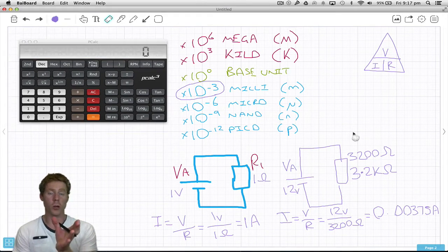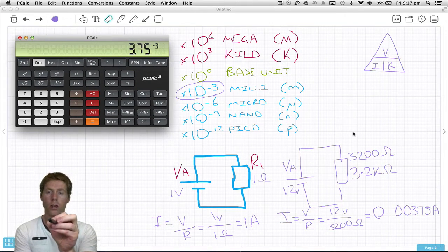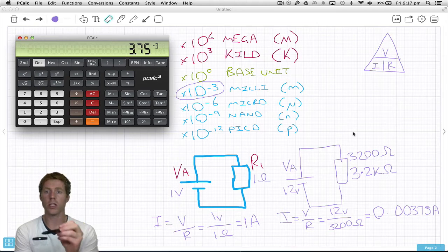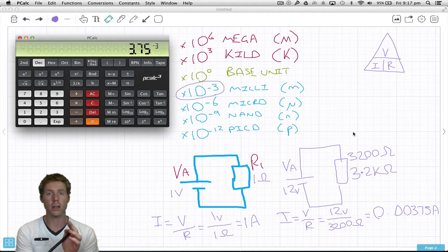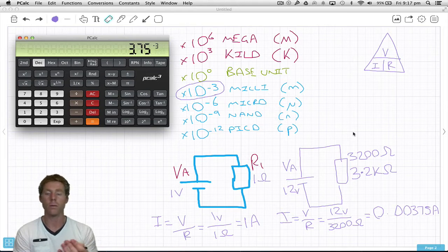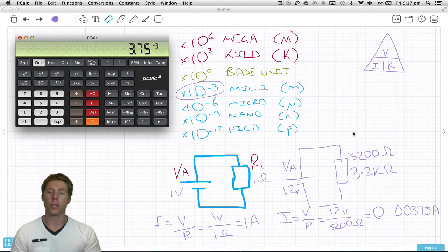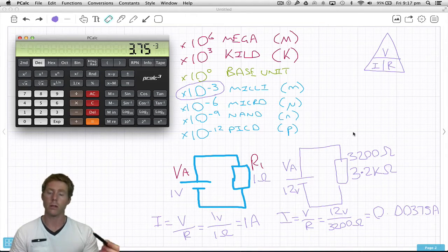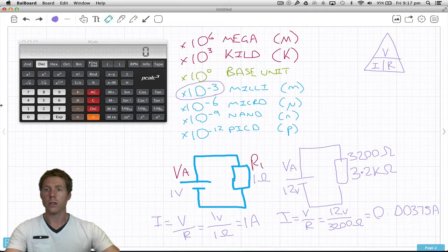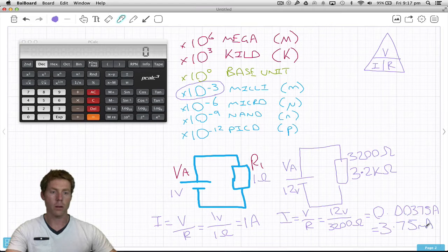The good thing about engineering notation is this: we can look at the answer and realize that negative 3 tells us to think milli. If it was negative 6 we'd say micro. Negative 9 would be nano, negative 12 pico. So I would look at my calculator and say that is 3.75 milliamps.